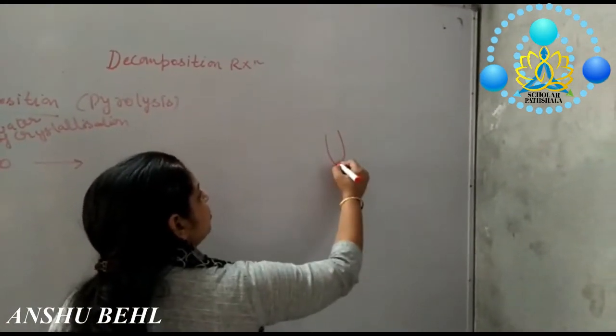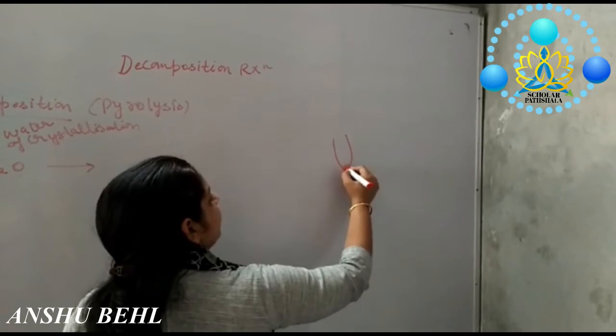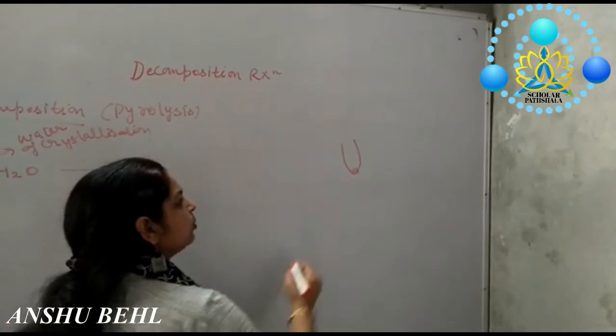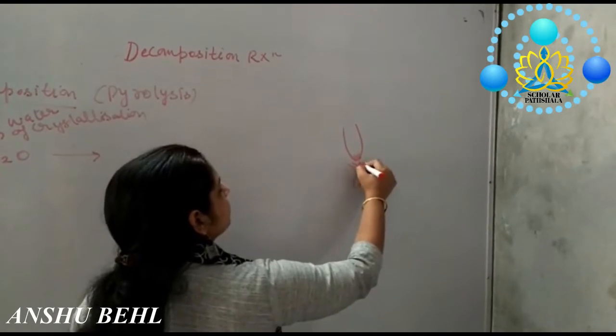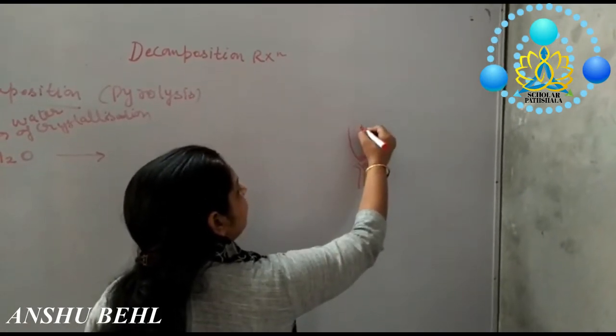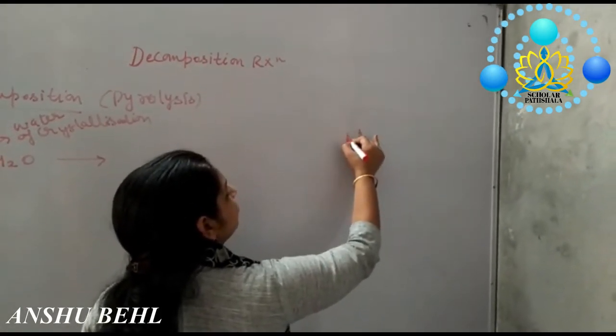When you will start heating it in a test tube, we are taking Ferrous Sulphate in test tube, start heating it. You will find that tiny water droplets will be found with the inner walls of test tube.